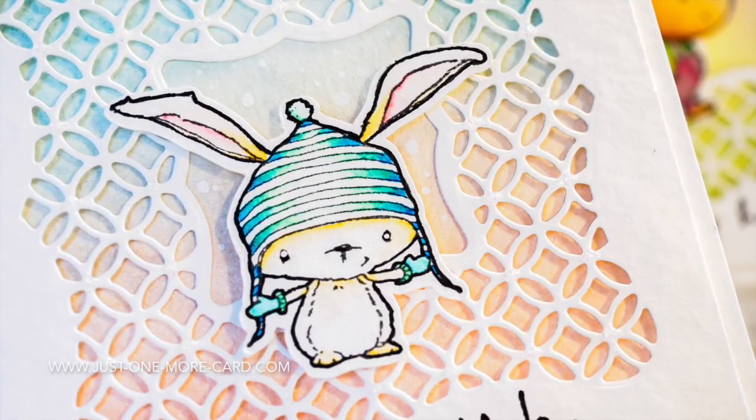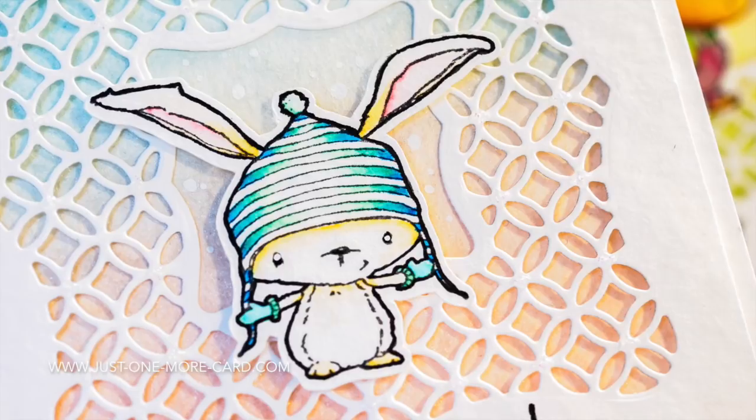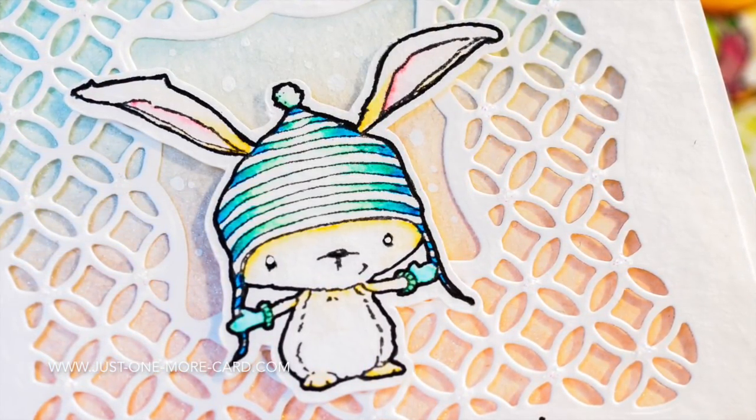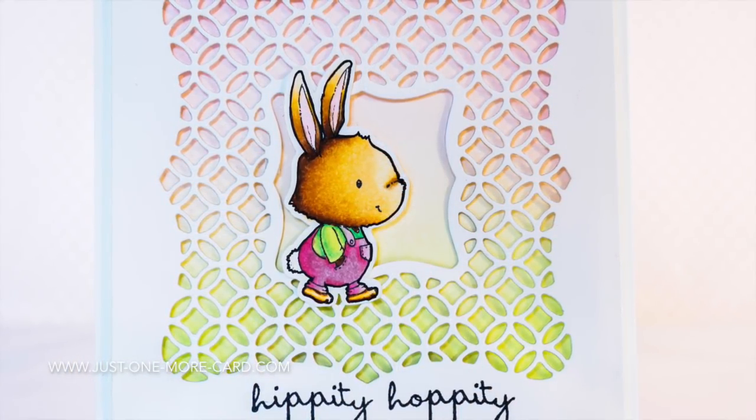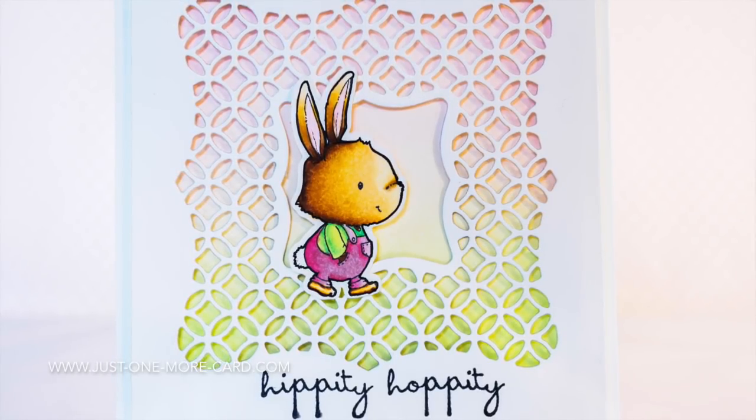But you can see here that I like them so much that I created a similar design, just different colors. This is also a stamp from Purple Onion Designs. It was stamped on watercolor paper and I used my Stabilo markers to color it in. And here is the card that I created for you today in the video.